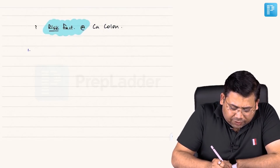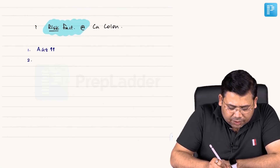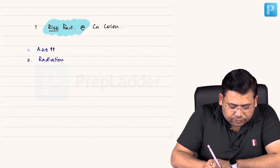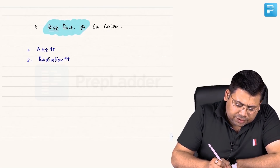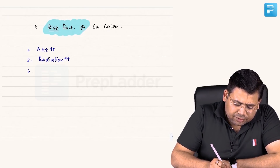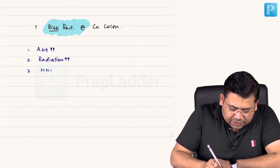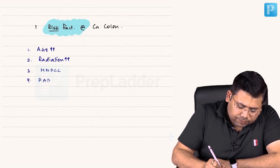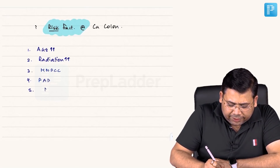The main important risk factors are: first, age — with age, the risk increases. Second, radiation — the risk increases. Third is HNPCC. Fourth is FAP. Fifth is diet.